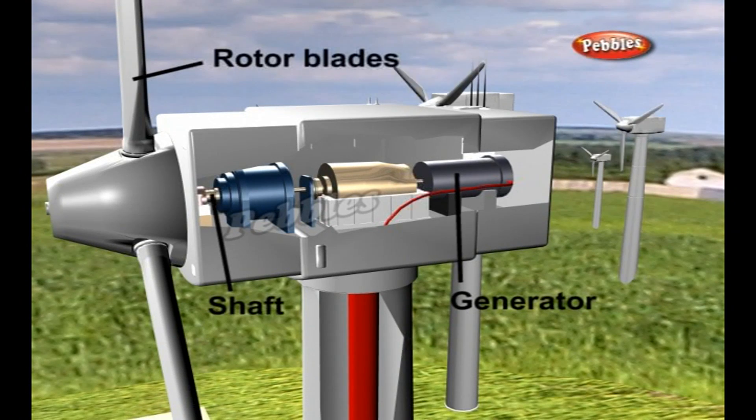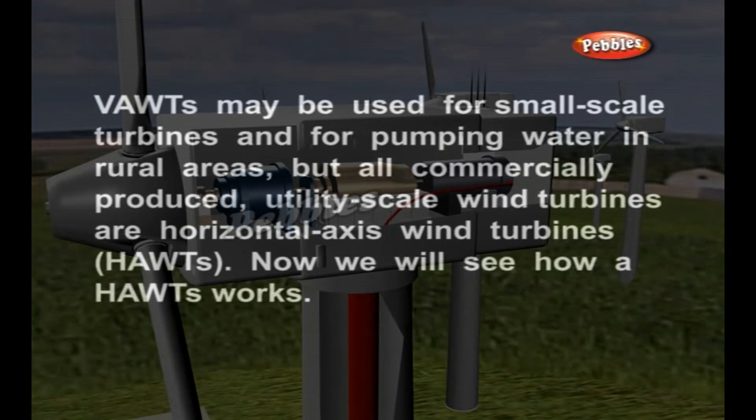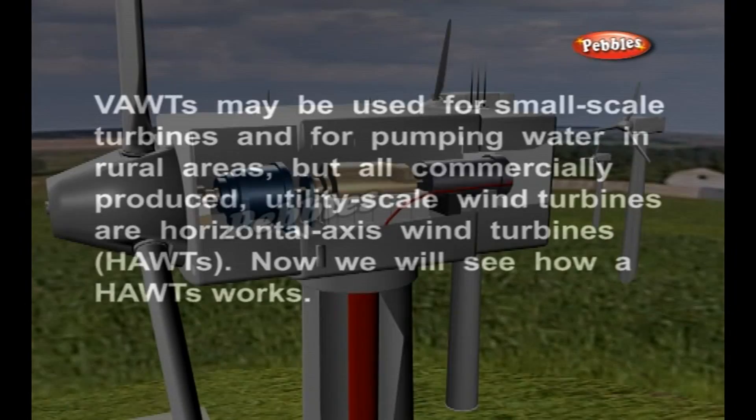There are two types of turbines: horizontal axis and vertical axis. VAWTs may be used for small scale turbines and for pumping water in rural areas. But all commercially produced, utility scale wind turbines are horizontal axis wind turbines.